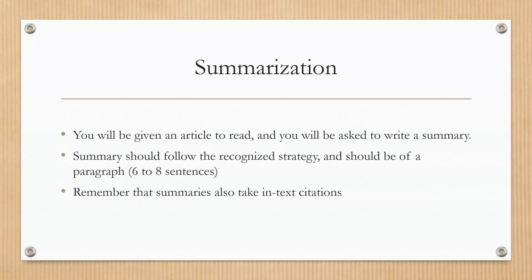The next part is going to be a summarization question. You're going to be given a full article to read and asked to write a summary. Remember that you did summary writing when you were doing your research file. Summaries should follow the recognized strategy and should be a full paragraph — approximately six to eight sentences. Remember also that summaries take in-text citations, so you need to do your APA with the summary as well. Not a list of references, but the in-text citations in your actual writing.